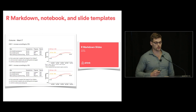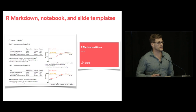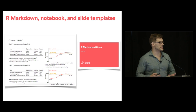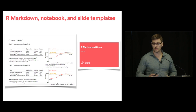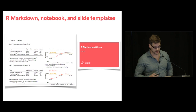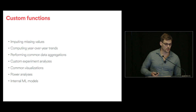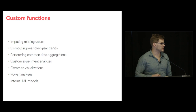The third component is R Markdown notebook and slide templates. Instead of using a Keynote slide that might need updating when we rebrand or change fonts, a lot of our reports are done with R Markdown and a slide template with reproducible code. We also have weekly reports that are automated using our brand. The final component is custom functions — imputing missing values, year-over-year trends, and a lot of custom machine learning things that we built, all inside this package.